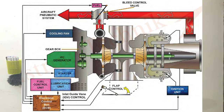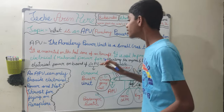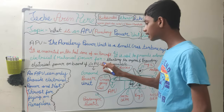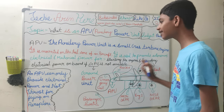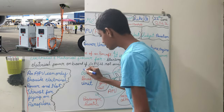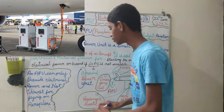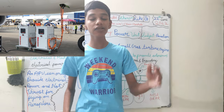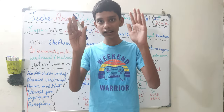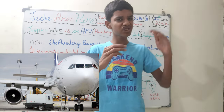Thrust is required to move the airplane, while electrical power is required to light the systems up. The APU is mainly used to provide autonomous electrical and mechanical power for starting the engines and providing electrical power on board if the GPU — Ground Power Unit — is not available. Whenever an aircraft lands or is parked at the airport, a ground power unit is typically provided.